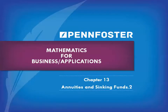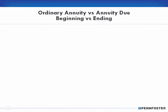Annuities are classified in basically two ways: there is an ordinary annuity and there is an annuity due. We also have to pay attention to the concepts of the beginning of a period and end of a period.